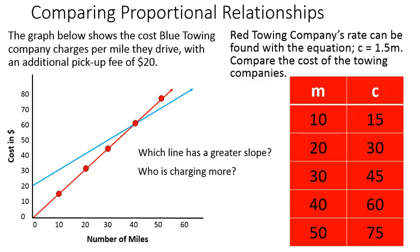Who's charging more? Well, that's a relative question, right? Up until about this point, you can see where we've hit 40 miles. Up until this point, red towing company is actually cheaper than blue towing company. But then after that point, blue towing company is actually cheaper than the red towing company. So who's charging more? Depends how many miles you drive. If you drive 500 miles, red's going to be quite a bit more expensive. But if you're only driving 10 miles, then blue would be more expensive. So it depends on the mileage.